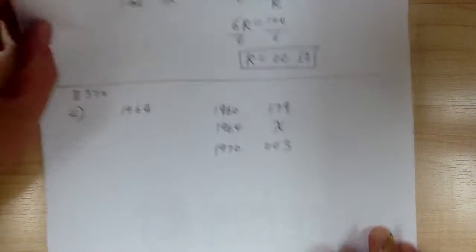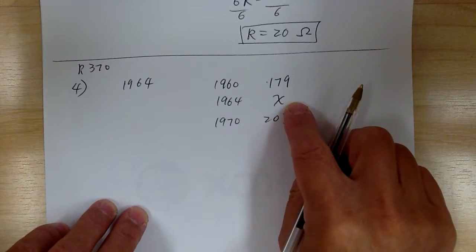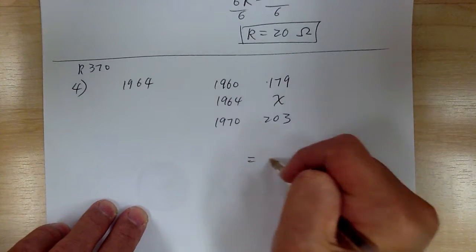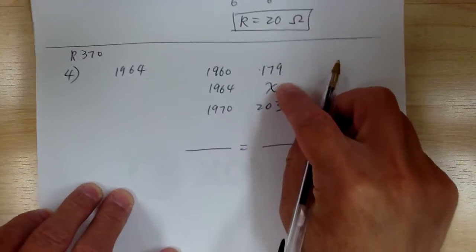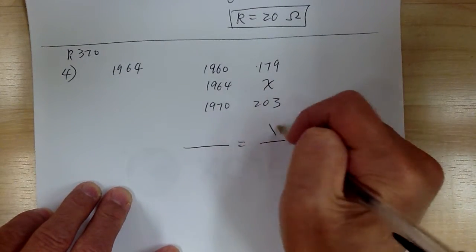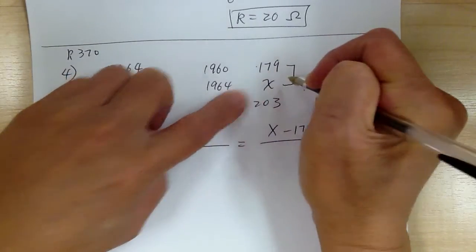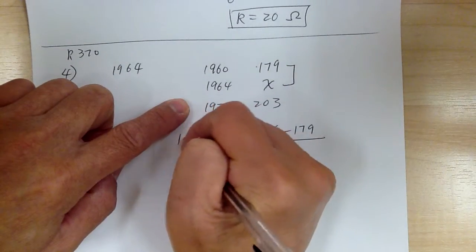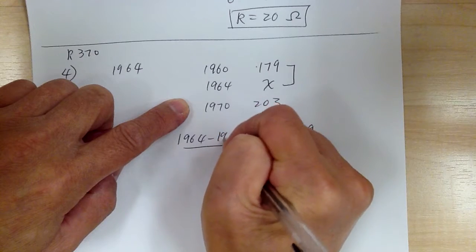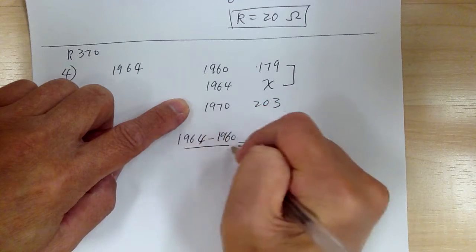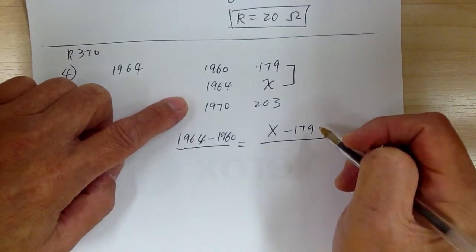And you got 1970 is 203. So now you're going to use the ratio. So whatever you're looking for is what you write first. So you're looking for X, so that's what you're writing first. So X minus 179, so you use this pair. So you have to do the same on this side. So 1964 minus 1960.